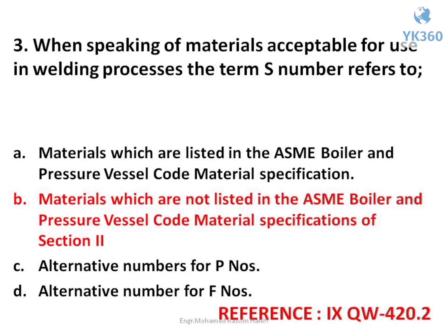Question number 3. When speaking of materials acceptable for use in welding processes, the term S number refers to — options are: A. Materials which are listed in the ASME Boiler and Pressure Vessel Code Material Specification, B. Materials which are not listed in the ASME Boiler and Pressure Vessel Code Material Specifications of Section 2, C. Alternative numbers for P numbers, D. Alternative number 4. Answer is option B. Materials which are not listed in the ASME Boiler and Pressure Vessel Code Material Specifications of Section 2.